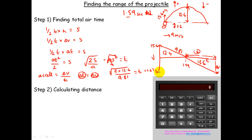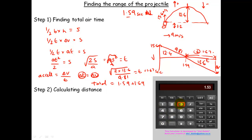So that additional fall time T is 1.67 seconds. The total air time is therefore 1.59 plus 1.67, which gives me 3.28 seconds — that's the total time the projectile was in the air.